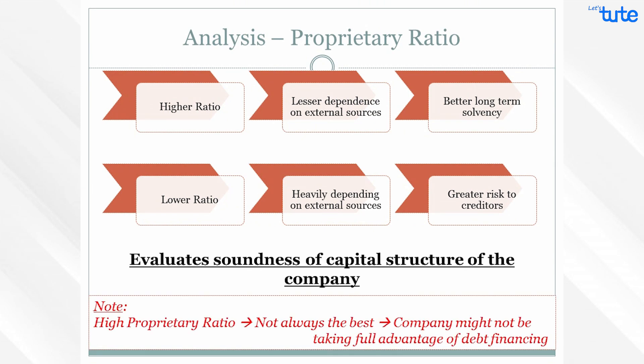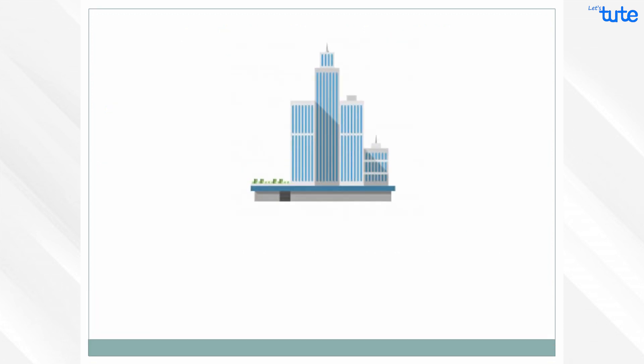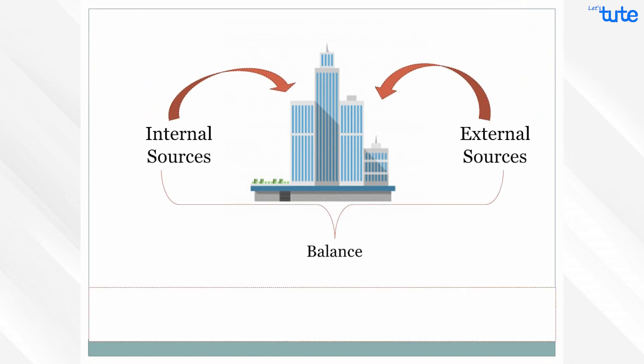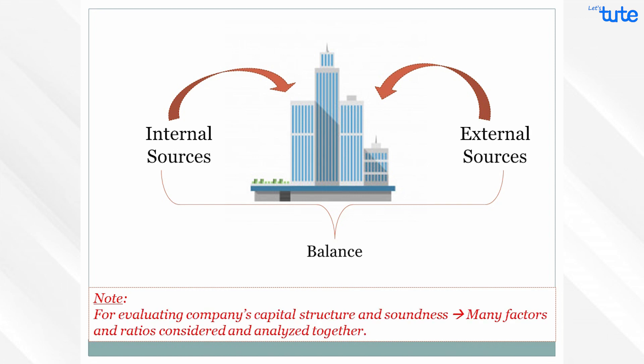Having a very high proprietary ratio does not always mean the best, as it depicts that the company might not be taking full advantage of debt financing for its operations — which is also not a good sign for stockholders. A company should mix and balance its internal and external sources so that neither is too high in comparison to the other. Also note that for evaluating a company's capital structure and its soundness, not only one or two ratios are significant — many other factors are to be considered and analyzed together.